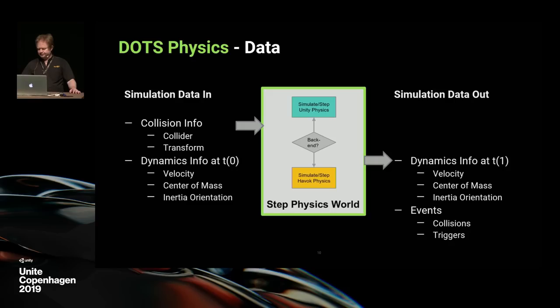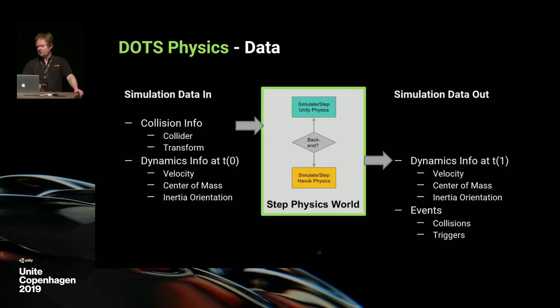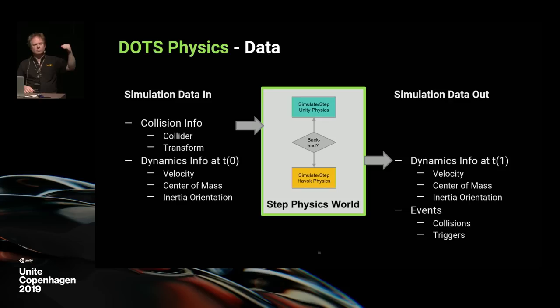What data is going into the step physics world? There are really only two sets of information: the collision information — the colliders and the transform, position in space and rotation — but also the dynamic information at a particular point in time: the velocity, center of mass, and the orientation of that body in motion space. Whenever the step physics world does its thing, you get out a second set of this dynamics information at a second time T1. Having a collision world and a dynamics world means you can be doing queries on the old T0 information at the same time as the physics is performing its simulation.